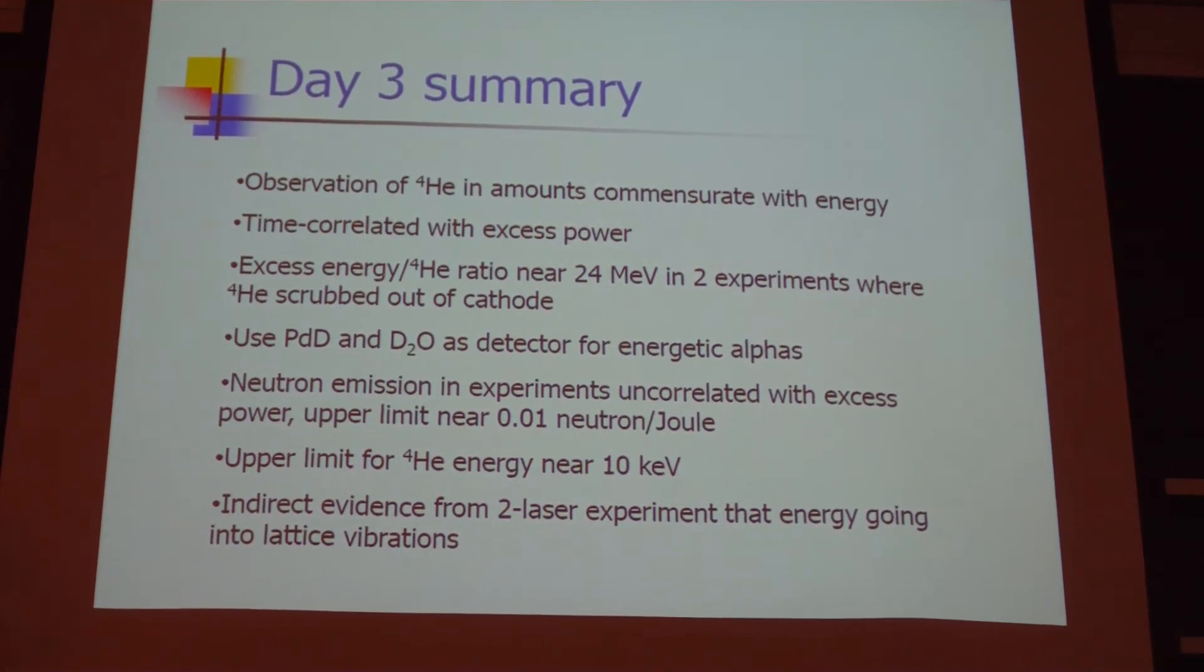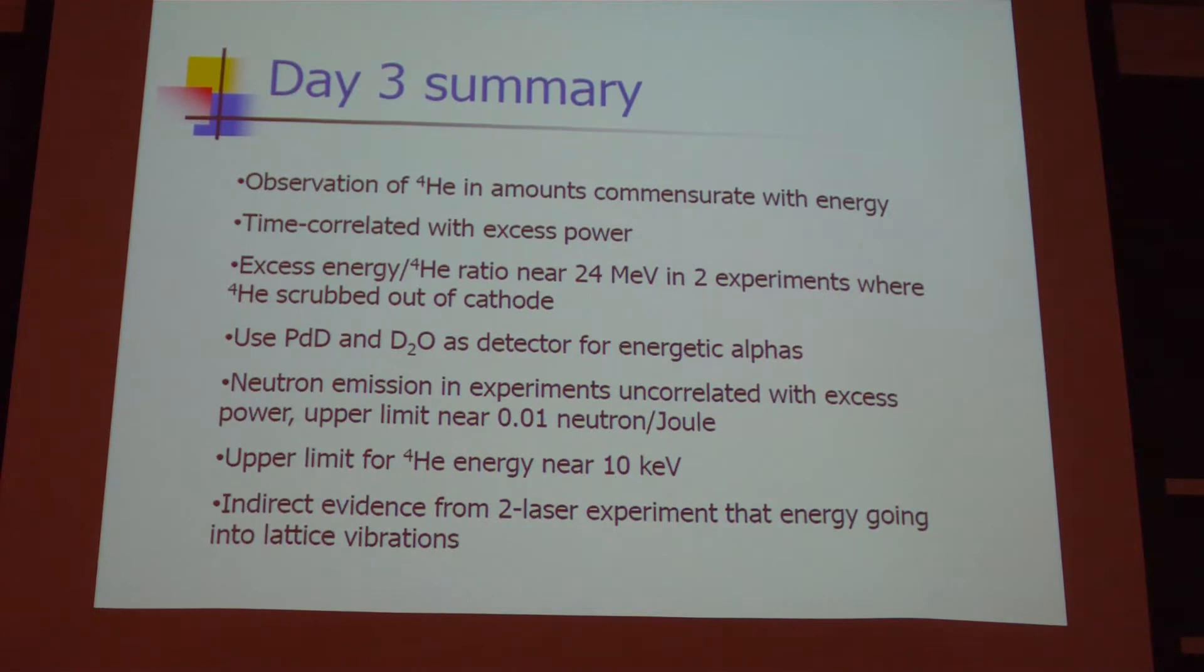From the upper limit from neutron emission, we found that there's not very many neutrons, which is consistent with the alpha particle being born on the order of 10 keV or less. It's an upper limit, but it's consistent with it being born stationary.